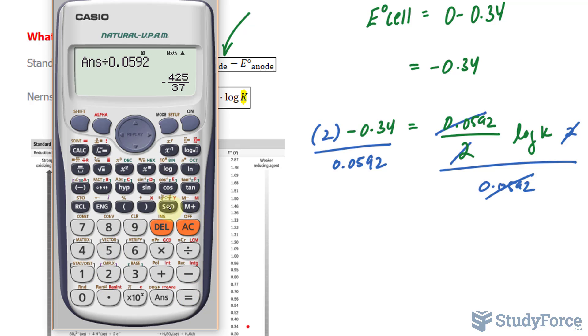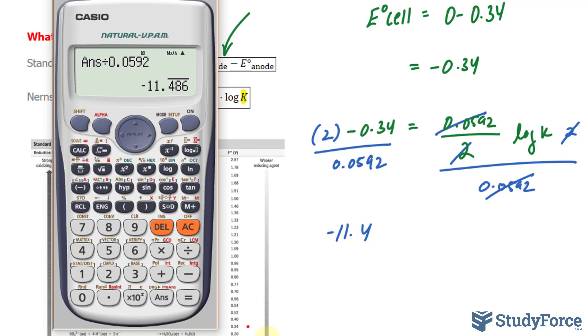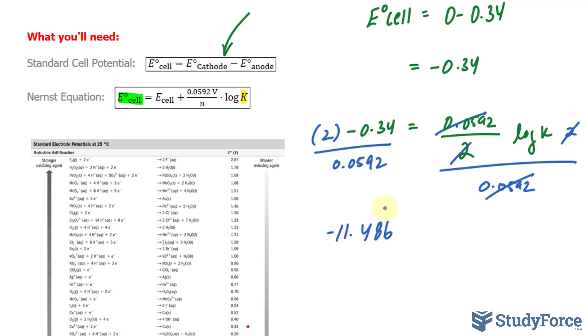and we get negative 11.486 repeating. We'll leave 5 digits, that's good enough,